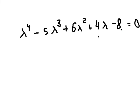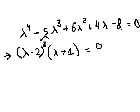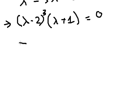In this situation we can factor the polynomial as lambda minus 2, everything to the power of 3, multiplied by lambda plus 1. So we can see that we have the power of 3, which means we have three repeated roots: lambda equals 2, and one root lambda equals negative 1.